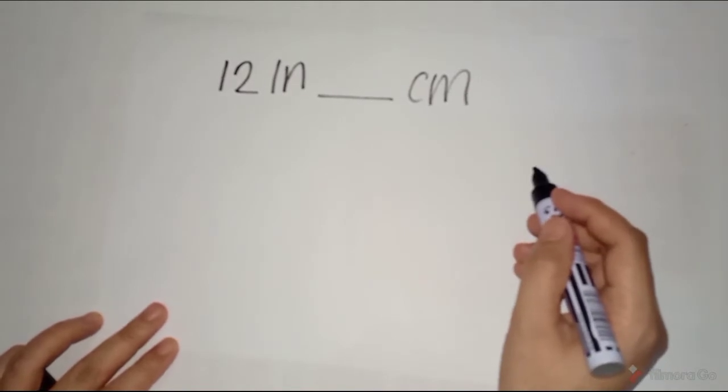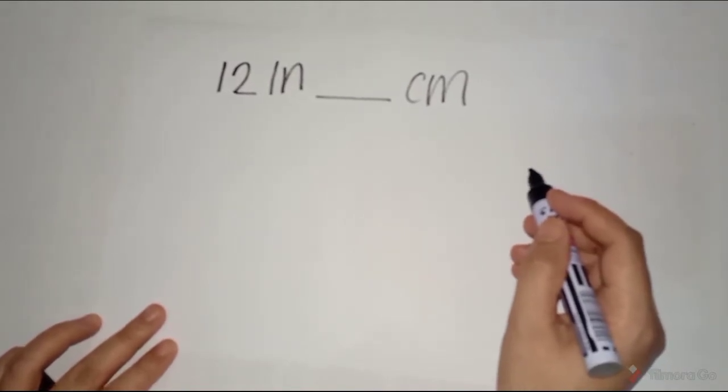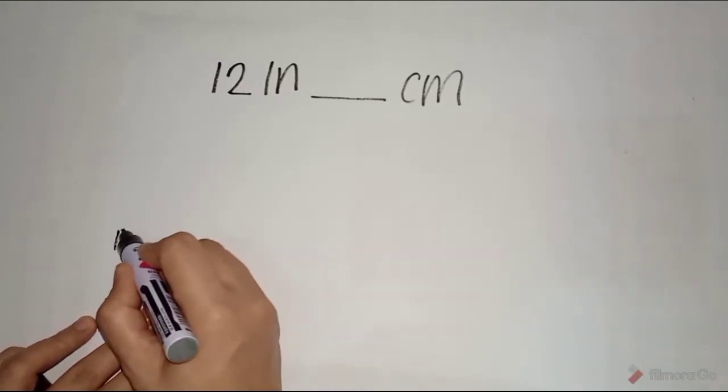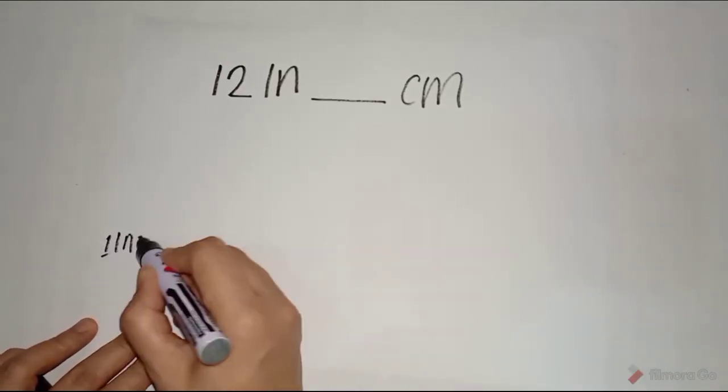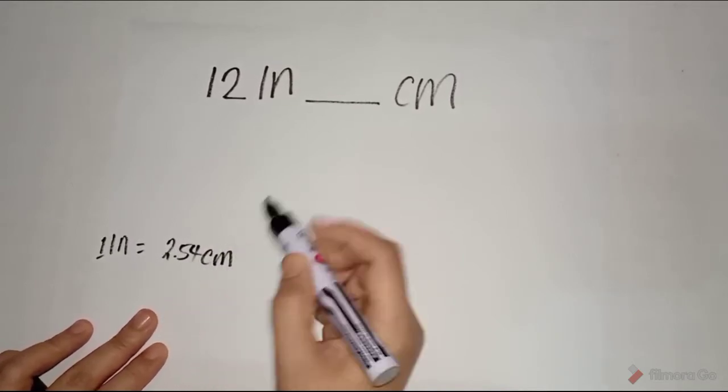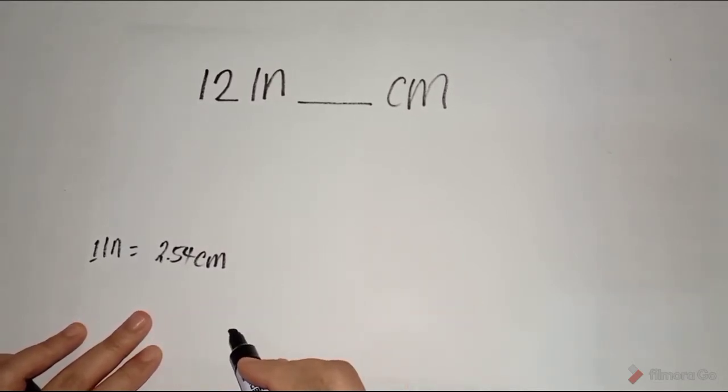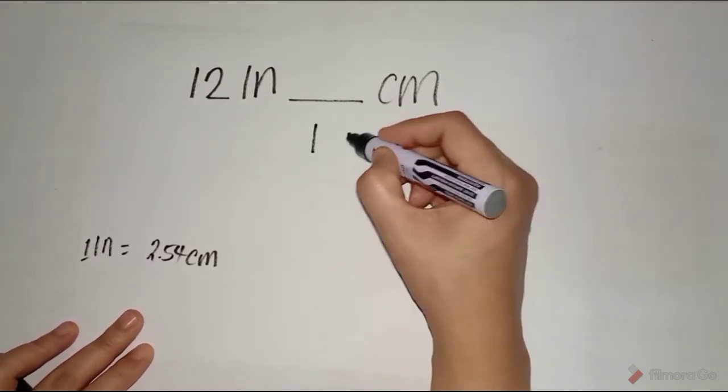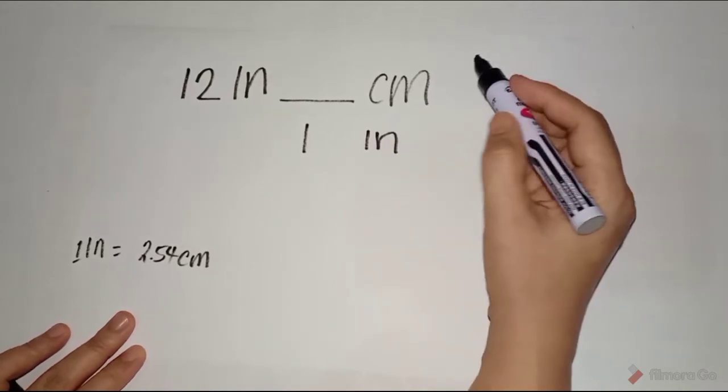Remember, what is the conversion factor that we are going to use? We can use 1 inch is equal to 2.54 centimeters. Therefore, in order to cancel the unit inch, we are going to write 1 inch as the denominator.